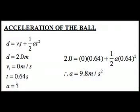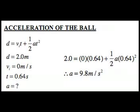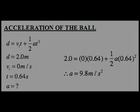Here is proof that the acceleration of gravity is, in fact, 9.8 meters per second squared. We know that the displacement of the ball dropped is 2 meters. The time of the drop was timed at 0.64 seconds. Initial velocity is zero because it started at rest. Using these figures in the formula d equals vi times t plus one half of at squared, we prove that acceleration is 9.8 meters per second squared.